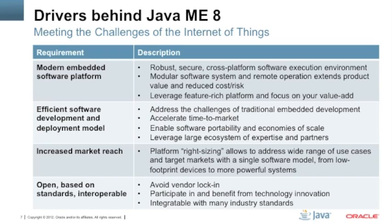Because of the unified development model, Java code and expertise is easily portable, so you can benefit from the economies of scale by applying existing solutions to other use cases. And you can innovate even faster by leveraging the expertise of 9 million Java developers. Third, the Java ME 8 design allows you to address a wide range of use cases and target devices with a single software model by optimizing and right-sizing the platform to fit the needs of your use case. And finally, Java ME is an open standard and interoperable with many other technologies, which allows you to avoid vendor lock-in and participate in a broad ecosystem of innovation, solutions and partners.